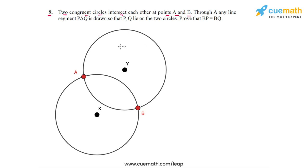In question 9 of this exercise, the problem statement says two congruent circles — congruent circles are circles with the same radii — intersect each other at points A and B. Here is a figure I've drawn for this statement: two congruent circles intersecting at points A and B.